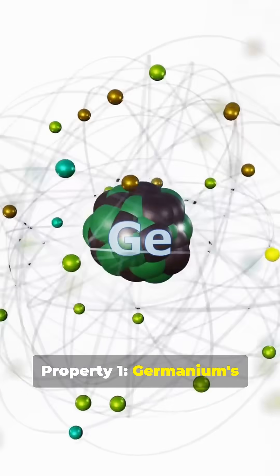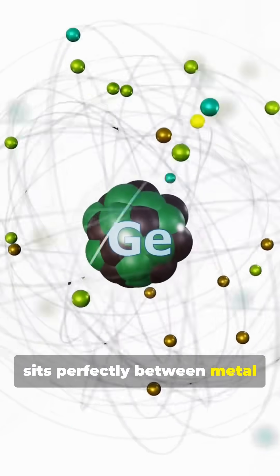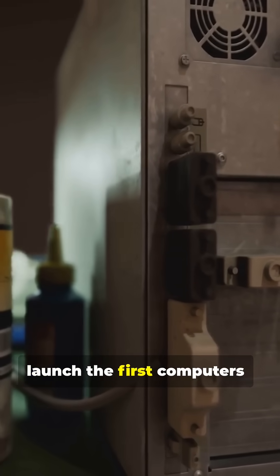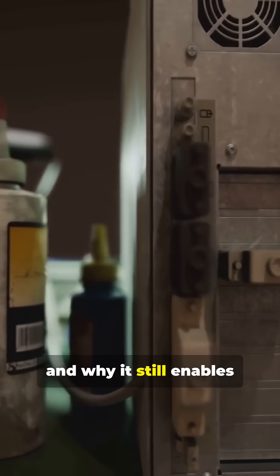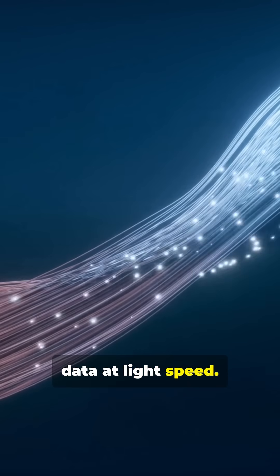Property 1. Germanium's metalloid electron structure sits perfectly between metal and insulator. That balance is why it could launch the first computers, and why it still enables technologies such as fiber optics that let us transmit data at light speed.